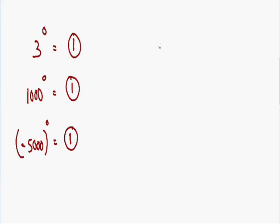Let's say you have the number 1 as the exponent. For example, 5 raised to the first power. The 1 exponent is completely unnecessary — basically you have the number 5 multiplied one time, so 5 to the first power is equal to 5. The 1 exponent is completely unnecessary, as you can see from this example.